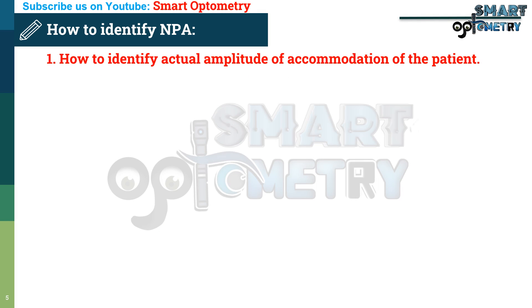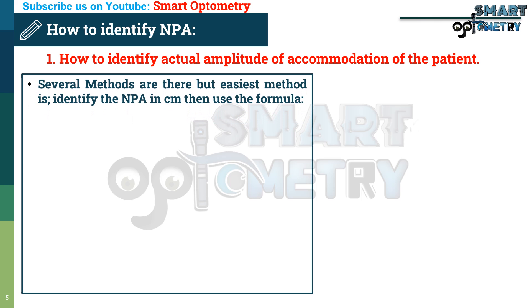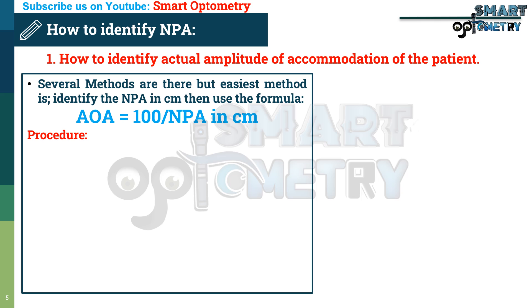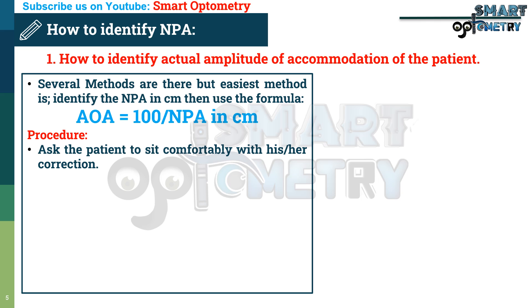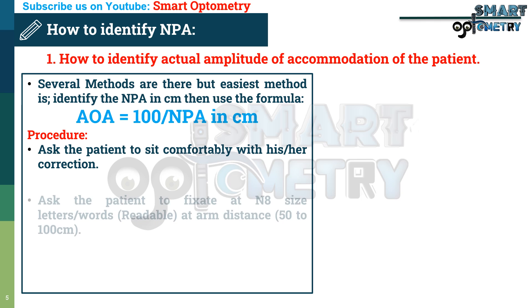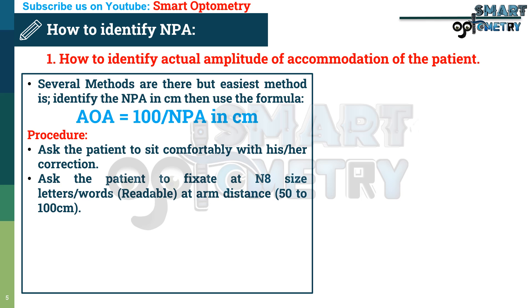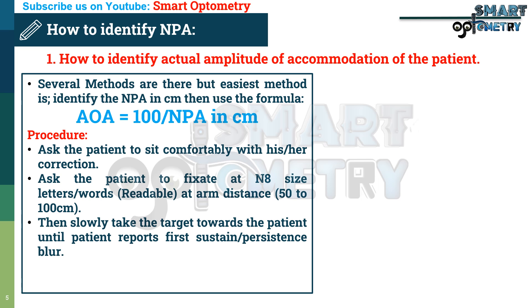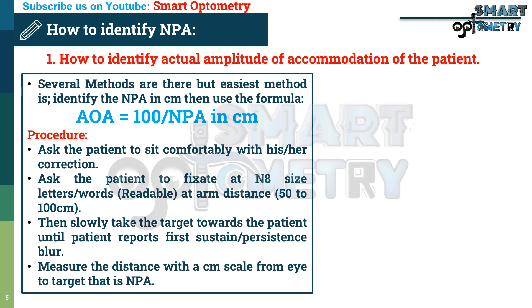To identify the actual amplitude of accommodation, several methods exist, but the easiest is to identify the near point of accommodation in centimetres and use the formula: amplitude of accommodation equals 100 divided by near point of accommodation in centimetres. To find the near point of accommodation, ask the patient to sit comfortably with their correction, then fix at letters at arm's distance (50 to 100 cm), then slowly bring the target closer until the patient reports first sustained or persistent blur. Measure the distance from the eye to the target — that is the near point of accommodation.